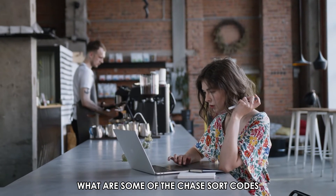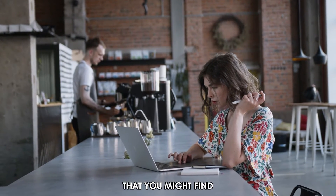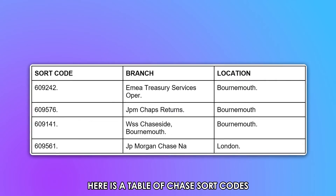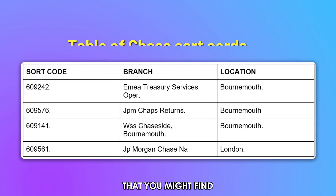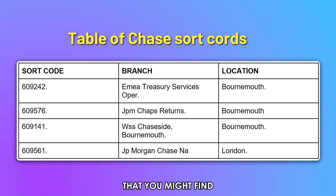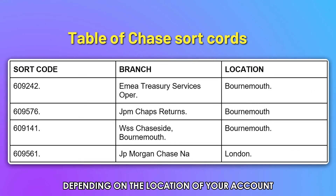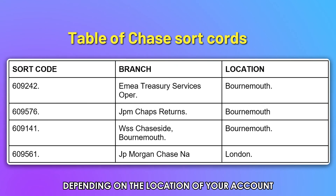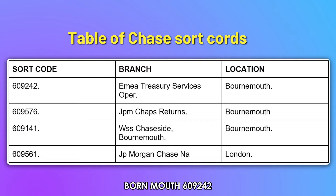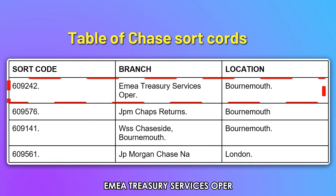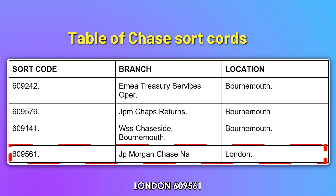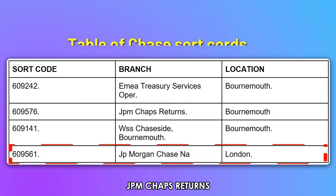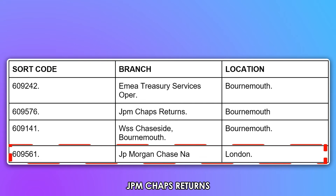What are some of the Chase sort codes that you might find? Here is a table of Chase sort codes that you might find depending on the location of your account. Bournemouth: 60-92-42, the EMEA Treasury Service OPER. London: 60-95-61, the JPMorgan Chase branch.